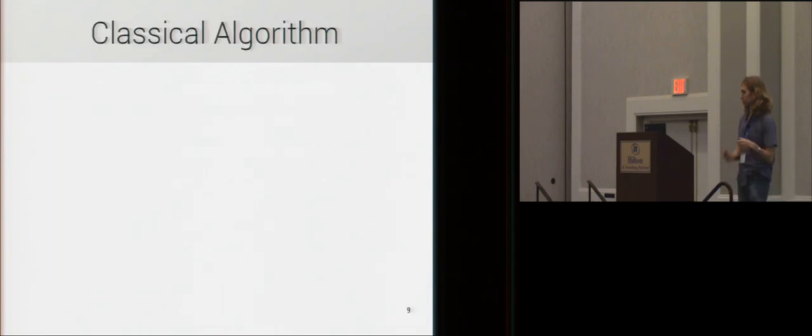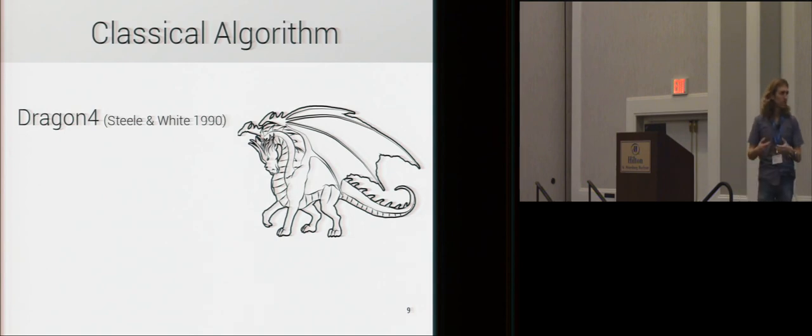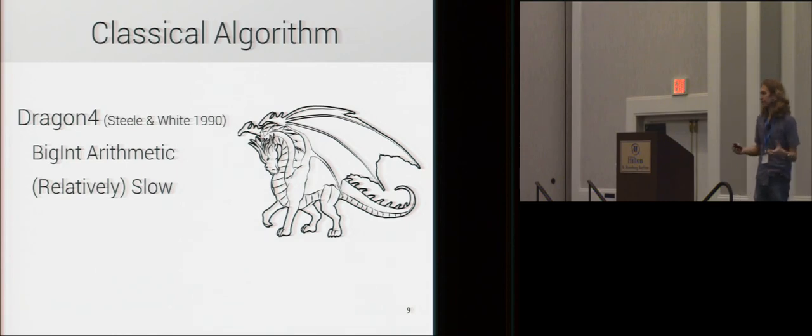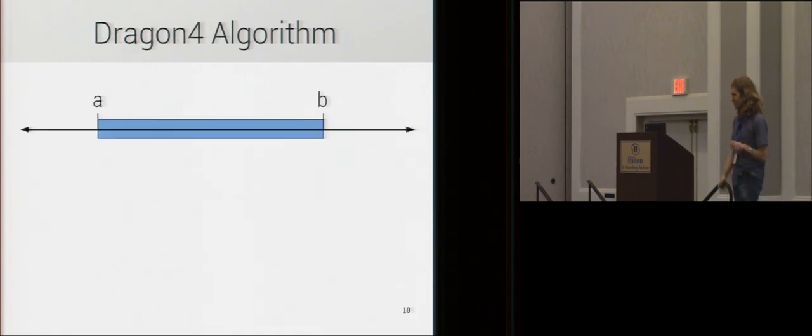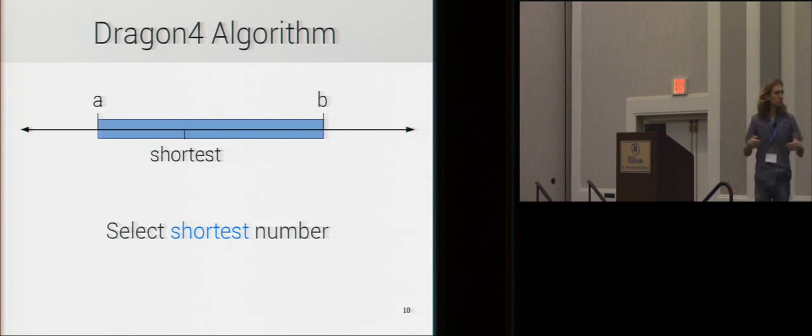All right, so, we're going to start with the classical algorithm. And the classical algorithm is called Dragon4, like I said, by Steele and White in 1990. And the big feature of it is it uses big integer arithmetic, or arbitrary integer arithmetic. And, as a consequence of this choice, it is relatively slow. For certain numbers, it can take a while to process. But, it's always correct. It always gives you the best answer possible. And, to sort of cover briefly how, in a high level, how this works, like I said, the goal is really, all right, we have some interval, and there's some shortest number in this interval, and we want to select the shortest number. And, to, so, what we essentially do is, we want to sort of scan over this interval in some way, very precisely, so that we can figure out what the shortest is, and return that. And, that's the Dragon4 algorithm.